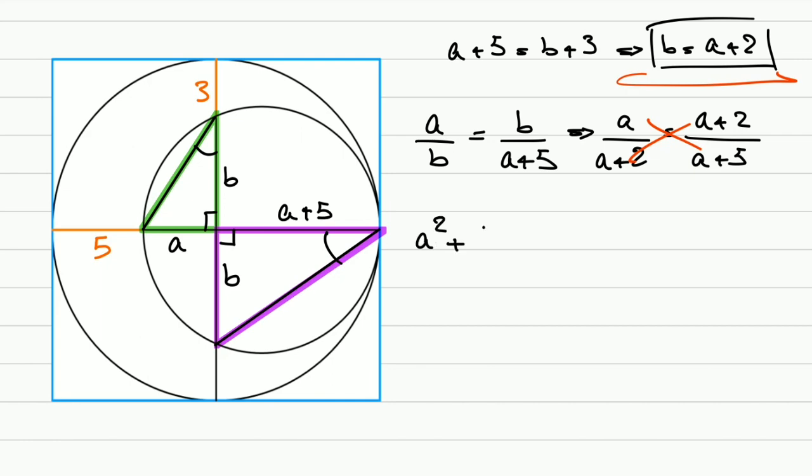A squared plus 5 times A is equal to A plus 2 quantity squared. That's A squared plus 4 times A plus 4. Now A squared cancels out A squared and it makes this way easier for us. Now let's bring this to the left side. We'll have A equals 4.